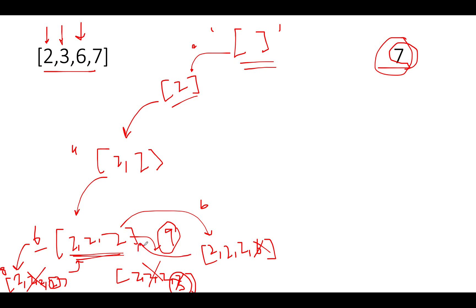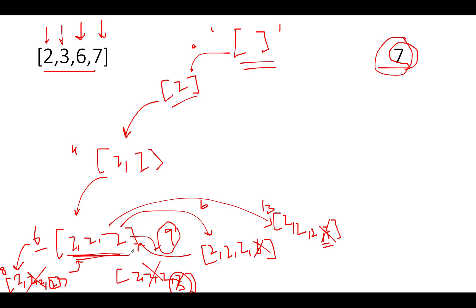We backtrack and try the next element, 7. Adding it to [2, 2, 2] gives a sum of 13, which is also invalid. We backtrack again, deleting 7. Since we've iterated over all possibilities from [2, 2, 2] without finding an answer, we backtrack further — deleting the last 2 — and return to the state [2, 2].